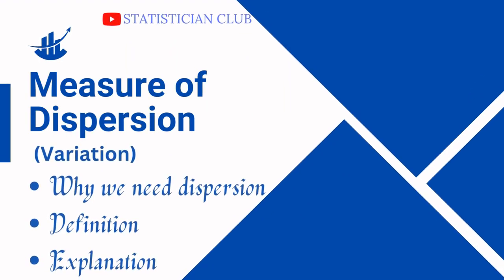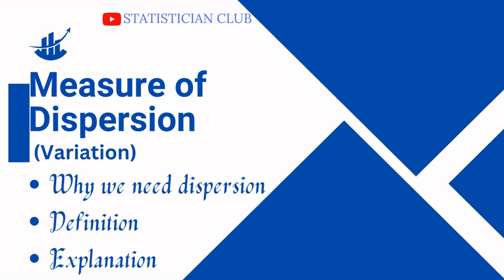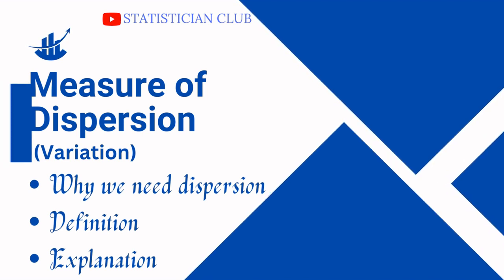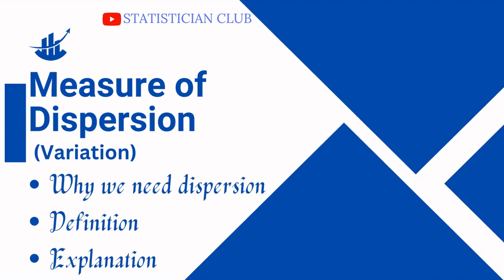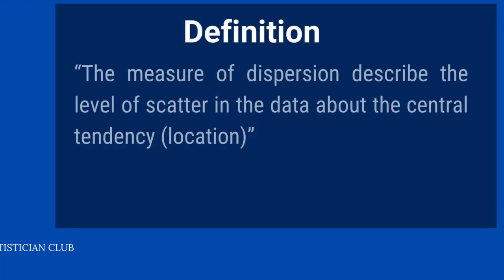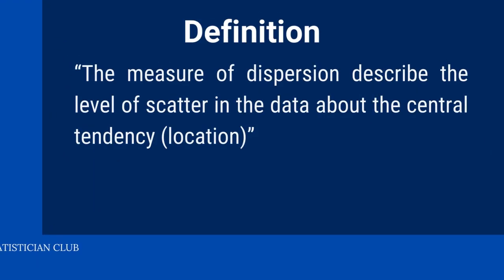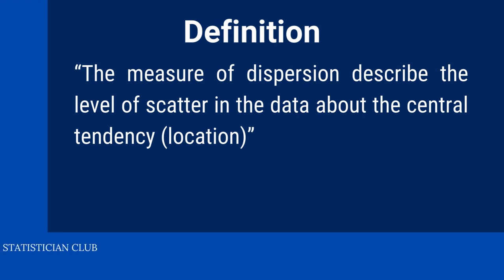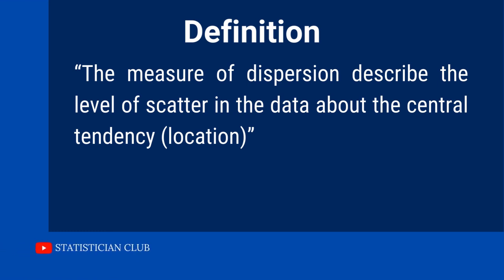In this video I explain about measure of dispersion. The points to be discussed are why we need measure of dispersion, its definition and supporting explanation. Measure of dispersion describes the level of scatter in the data about central tendency, or the other name of central tendency is location — measure of location.